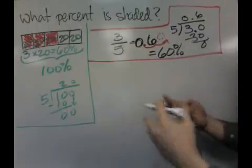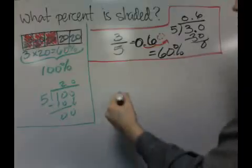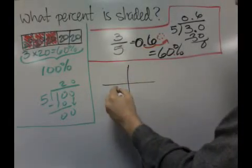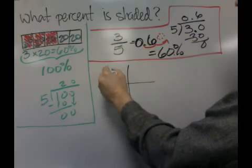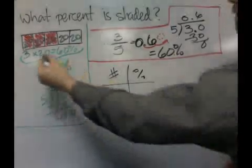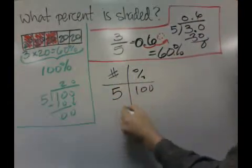And the third, kind of the more traditional way, is to think about a proportion. And I'm going to do that in a table. And I'm going to say, like plain old numbers, and I'm going to put over here percents. So if you have 5, that would equal 100%.